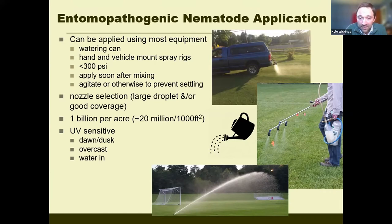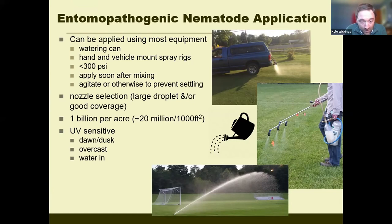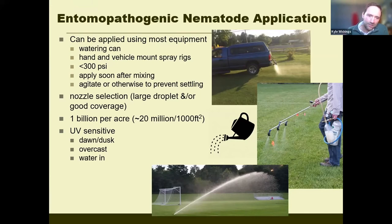Nematodes are UV-sensitive, which affects how we make applications. Try to apply at dawn or dusk — dusk is best because the nematodes have the entire following evening to settle into the soil before the sun beats back on the ground. You can also capitalize on overcast days, especially timed with a rain event, because it's really important to provide water for the nematodes to move into the soil. If you have irrigation, use it afterwards to water nematodes in, or time applications with precipitation when possible. This gives nematodes the best chance of moving from the soil surface down to the roots where the pests are.